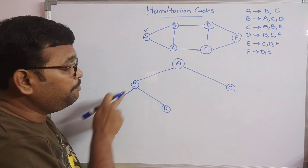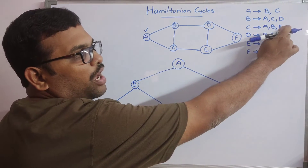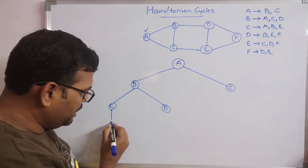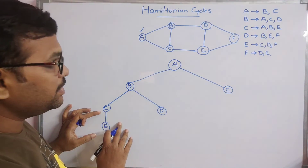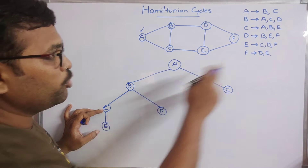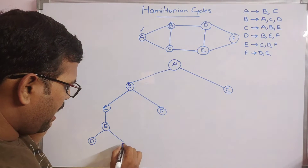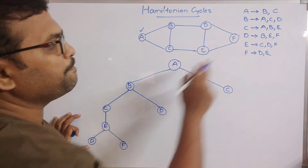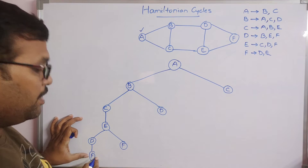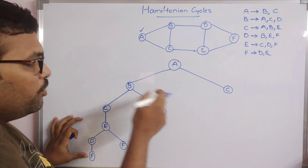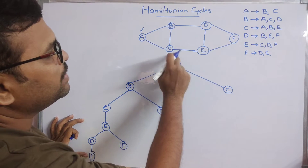We need to find the depth, so going to C: C has edges A, B, E — A and B are already visited, so only E is unvisited. From E, the outgoing edges are C, D, and F — C is already visited, so we have D and F. Going deeper to D: D has edges B, E, F — E is there, B is there, so we can reach F. So the path so far is A-B-C-E-D-F.